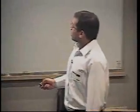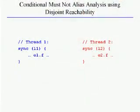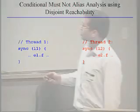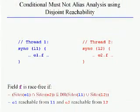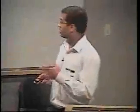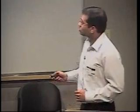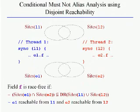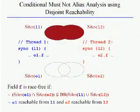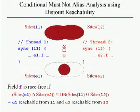Using these conditions on the medium-grained locking example: sites(x1) = sites(x2) = {h1}, and sites(x1.g) = sites(x2.g) = {h2}. So the condition becomes: is {h2} contained in dr({h1})? As I mentioned earlier, this predicate is true. Furthermore, x1.g is syntactically reachable from x1, and x2.g from x2. Both conditions hold, and thus we've proven race freedom using conditional must-not-alias analysis.